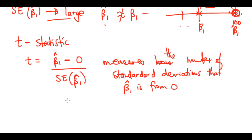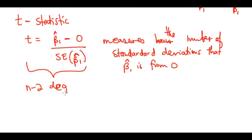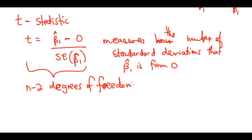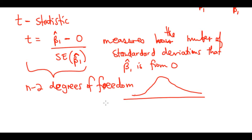If there is no relationship between x and y, we expect this t-distribution to have n minus two degrees of freedom. The t-distribution has a bell shape, and for values of n greater than approximately 30 it acts very similarly to a normal distribution.